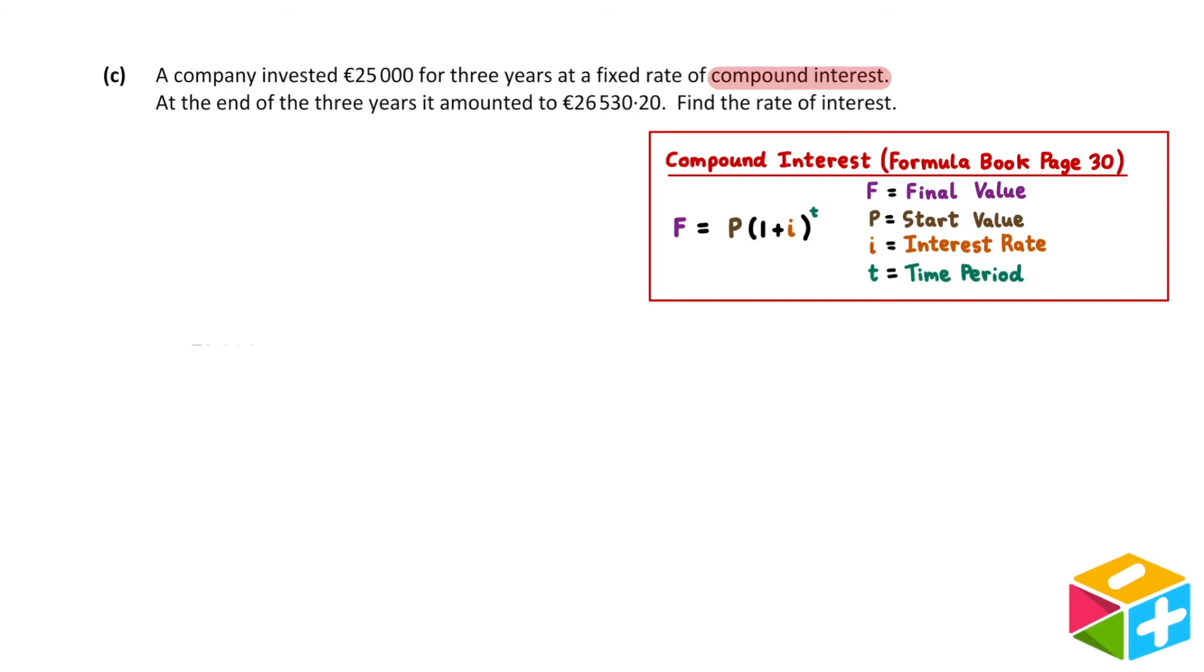As always, whenever we have a formula, the first step is to identify the values for each of the letters. F is the final value, and this refers to the €26,530.20 that we have at the end of the three years. P is the start value, and this refers to the €25,000 the company invested at the start. I is the interest rate, and in our question, this is the unknown value we're trying to find.